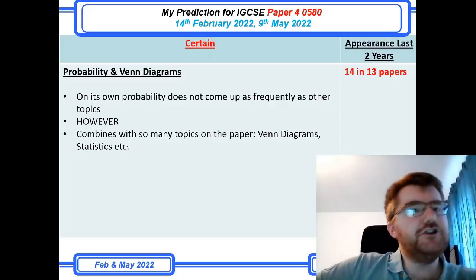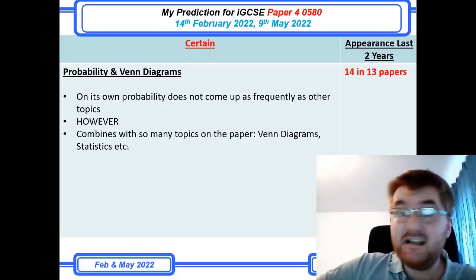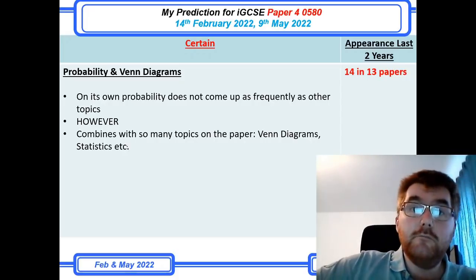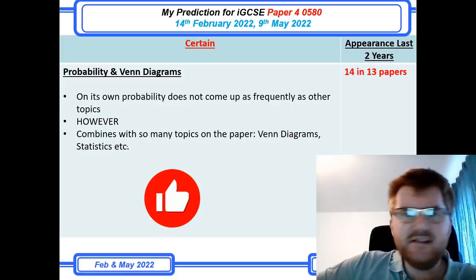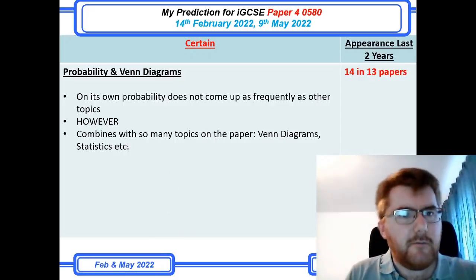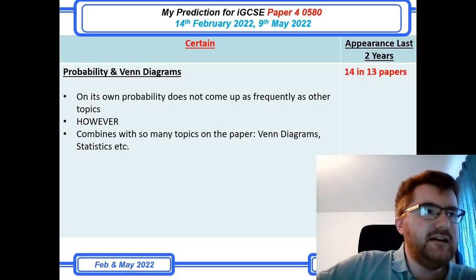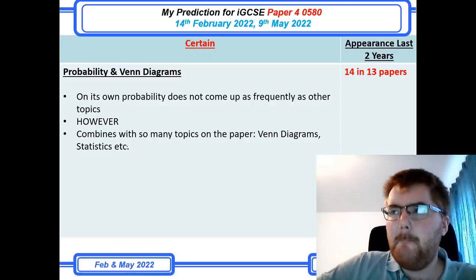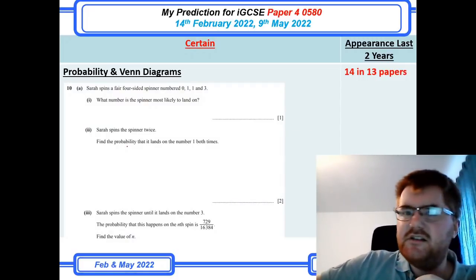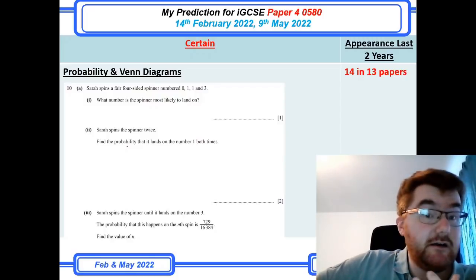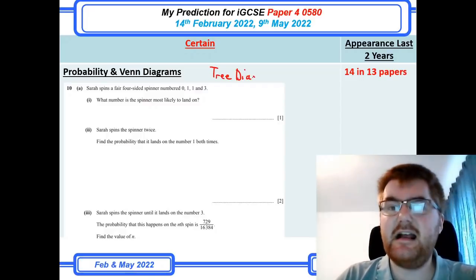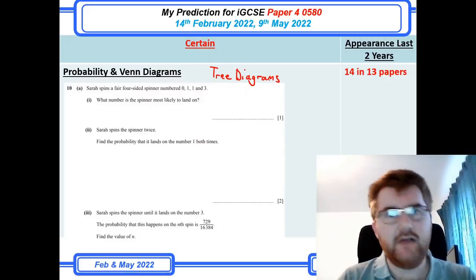My last certain topic is a combination: probability and Venn diagrams together. Probability on its own comes up around 10 in 13 papers, but it's the combination with Venn diagrams — which appear four or five times — that makes this a certain topic. Statistics can also feed into probability questions. A typical question uses conditional probability and tree diagrams to work out various probabilities. The most important skill is knowing how to draw tree diagrams, create them, and assign the correct fractions to each branch. There is also a dedicated probability series available for further practice.